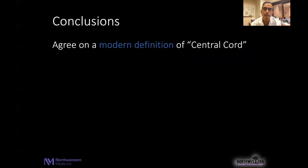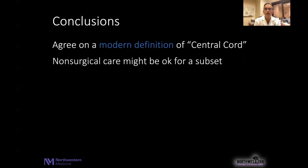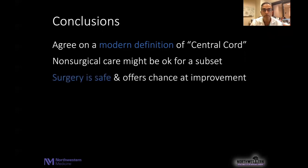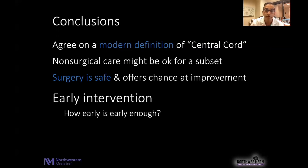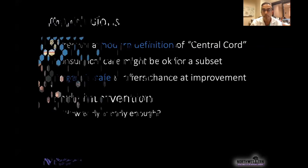In conclusion, I think we want to come to an agreement on a modern definition of central cord. The concept of acute traumatic myelopathy really resonates and makes sense — it's a stable spine with spondylotic or congenital stenosis with an acute traumatic myelopathic event. Non-surgical care may be okay for a subset, but we really don't know how to identify those patients at time zero. We watch them in the hospital and see if they're improving, but if they're not, we move very rapidly to surgical decompression. Surgery is safe and likely offers patients who are not improving on their own the best chance at neurological improvement. The question we don't yet know the answer to is how early is early enough in this population. Thank you.